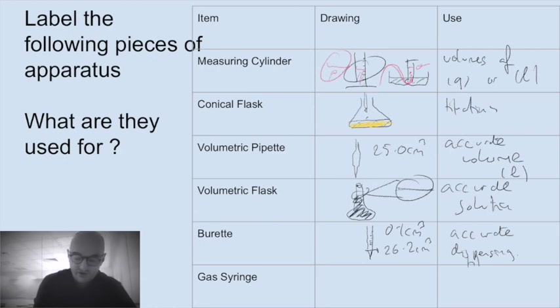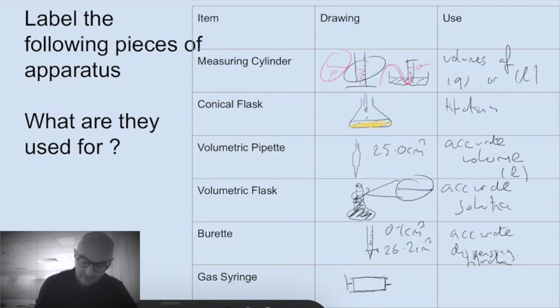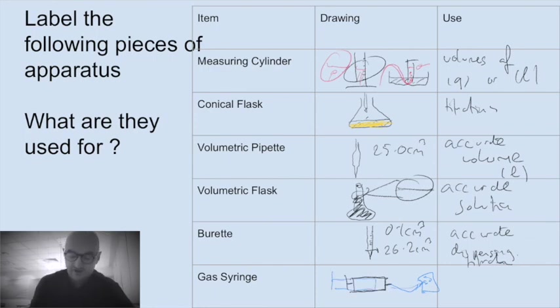The gas syringe is a wonderful thing if it doesn't roll off the bench. It has a plunger which goes into a barrel, has a nozzle on the end, and if you connect it to a tube, which is connected to a chemical reaction, which is generating gas, goes into the tube, pushes the plunger back here, and this is the volume of gas, which is given off. So this is for accurate gas volume measurement.